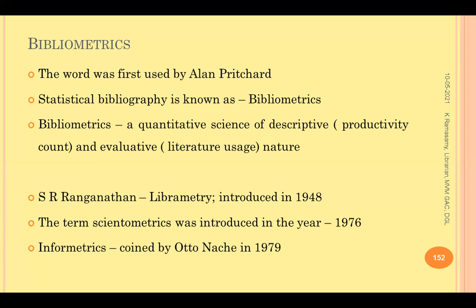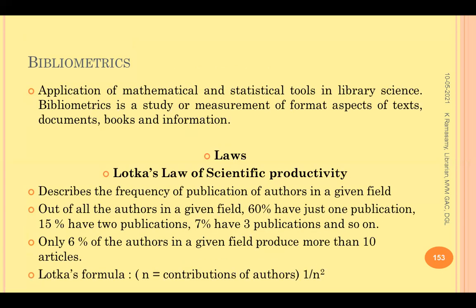Later, we had scientometrics, the term introduced in 1976. Then we had informetrics, the term coined by Otto Nachi in 1979. Bibliometrics, as noted, is the application of mathematical and statistical tools in library science research. When you talk about bibliometrics, remember the three laws of bibliometrics.